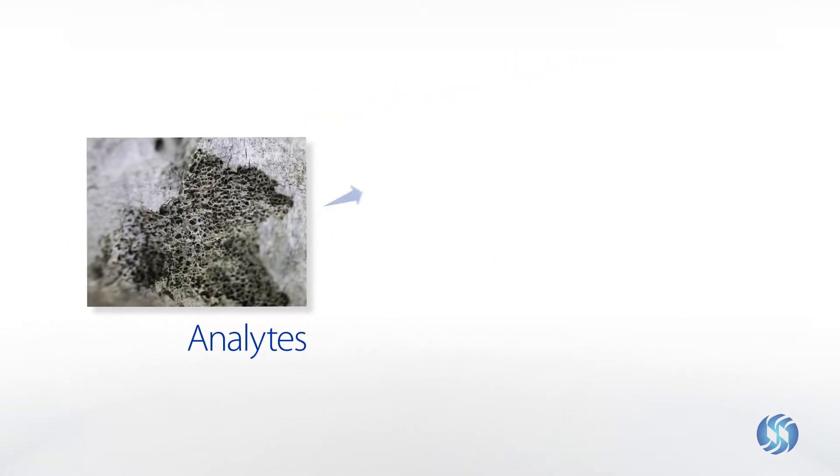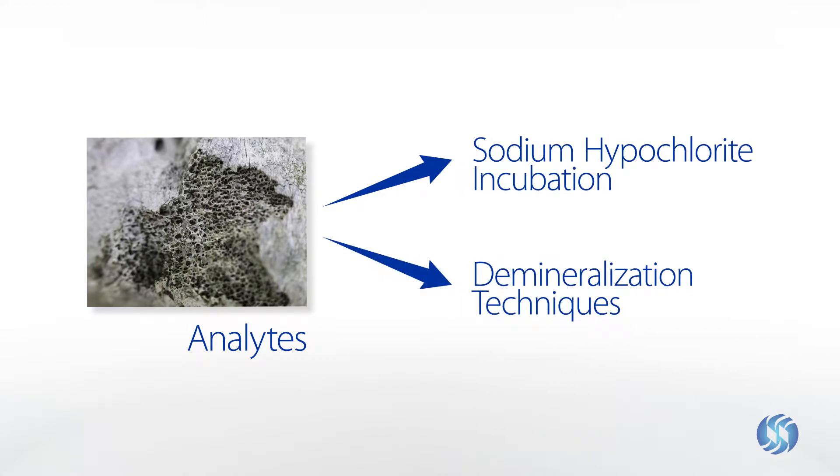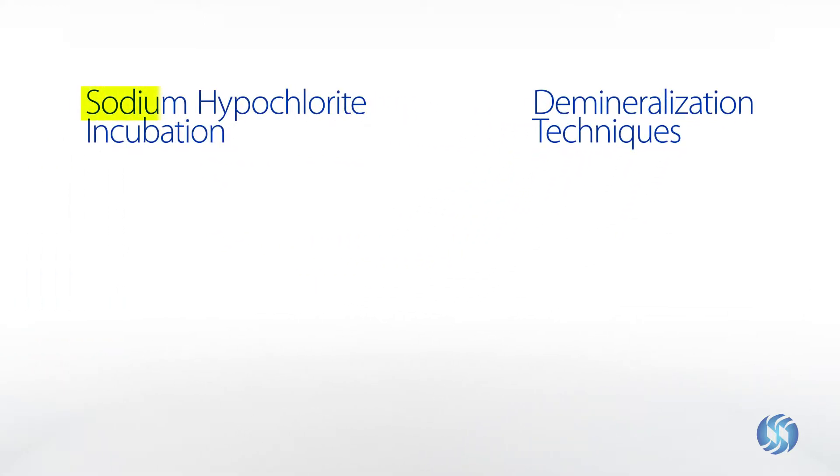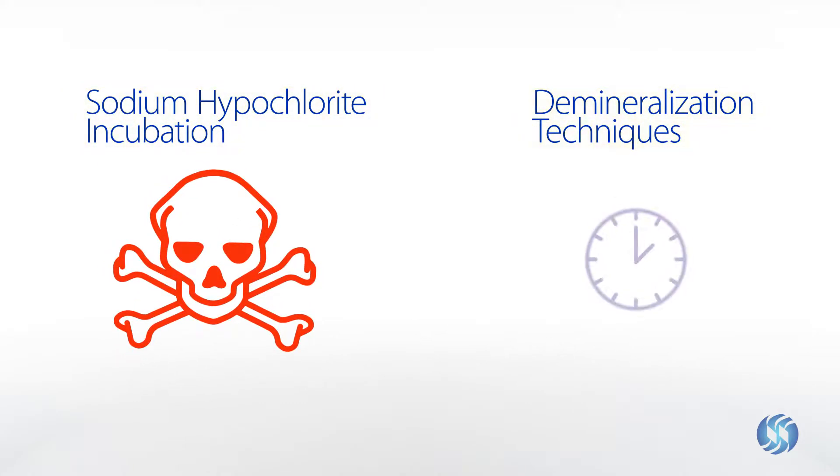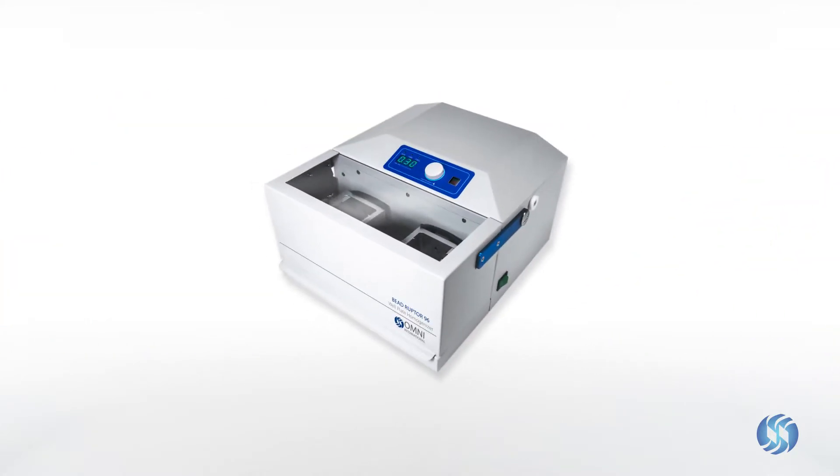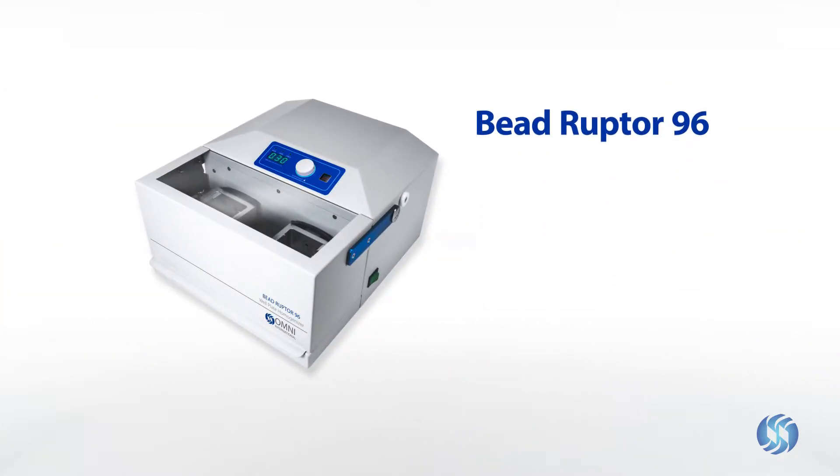Standard methods include sodium hypochlorite incubation or demineralization techniques. The use of strong oxidizing compounds is hazardous, and demineralization methods are extremely time-consuming. Cryo-milling on the B-Rupter 96 offers a safer and faster approach while maintaining analyte integrity and improving yields.